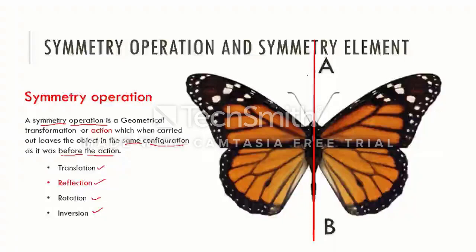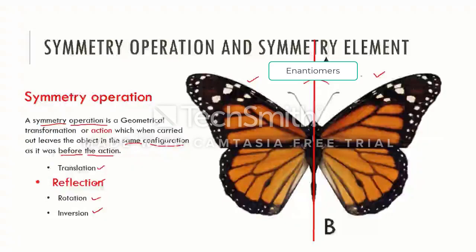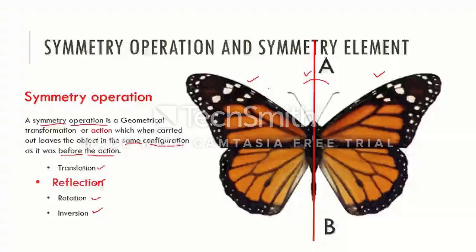Recall the example of the butterfly. The butterfly will look the same if we reflect it at this mirror plane AB. Parts which are mirror images of each other are called enantiomers. Thus, two sides of this butterfly are enantiomorphic forms of each other.